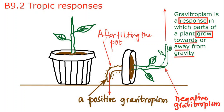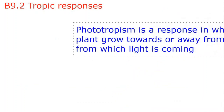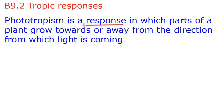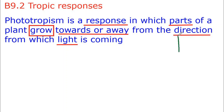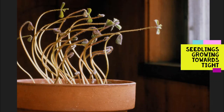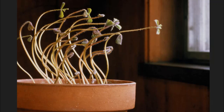Phototropism can be defined as a response in which parts of a plant grow towards or away from the direction from which light is coming. It results in a growth movement, which is why tropic responses are also called directional responses. We can see in this picture how the shoots of a plant start growing towards the source of light reaching tiny seedlings through a window from the sun.